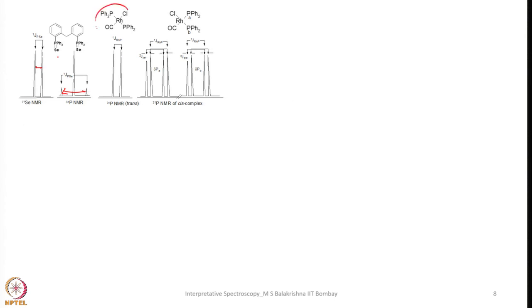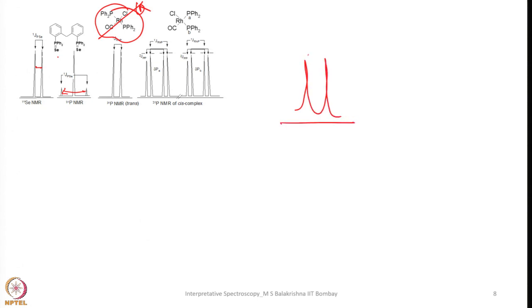Now let us look into the trans compound. In the trans compound, both phosphorus atoms are identical by a C2 axis of rotation passing through Cl and the metal center. As a result there is only one type of phosphorus, and when you look into the 31P NMR they are simply coupled to rhodium to give a doublet — a very simple doublet — and this separation is called 1J(RhP).